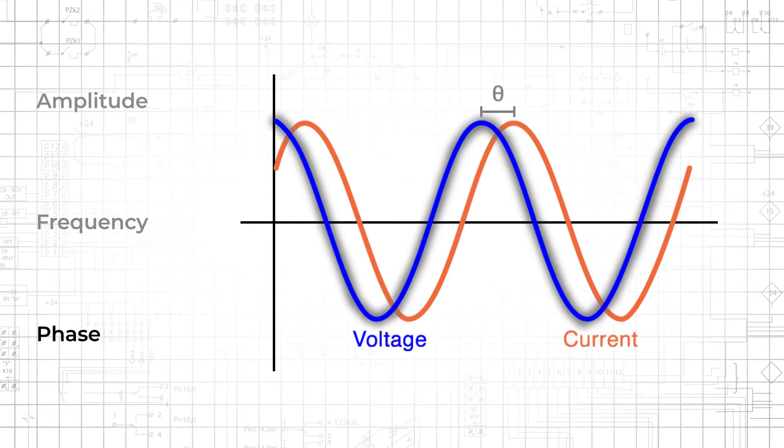Phase refers to the horizontal position, in degrees, of a waveform with respect to one cycle. Phase shift or phase difference describe the extent to which one signal is shifted to the left or right relative to another signal.